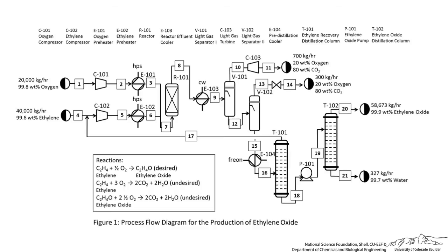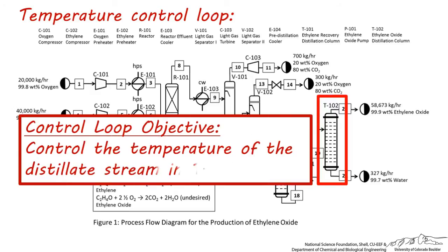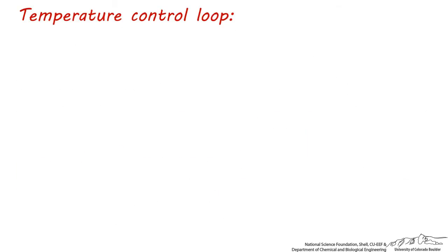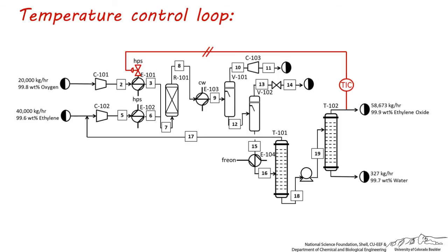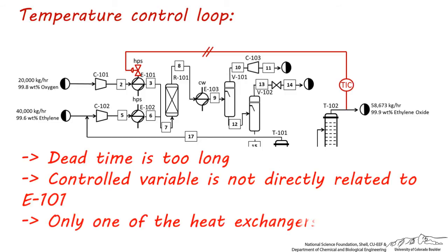Let's look at another example, this time of an improperly designed temperature control loop. Let's say we'd like to control the exit distillate temperature from T102. Here's one example of how we might do this. What's wrong with this control loop? You obviously want to try to avoid a control loop like this, where the dead time is too large, the exit temperature is not directly related to the heat exchanger attempting to control it, and only one of the parallel heat exchangers is being controlled.